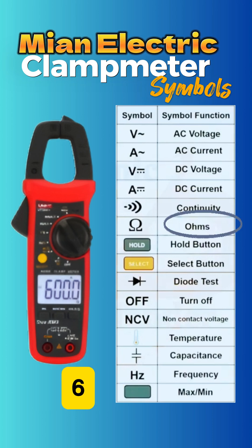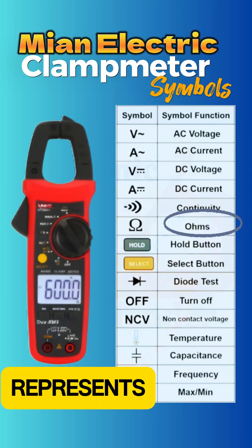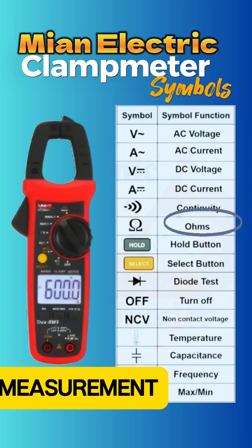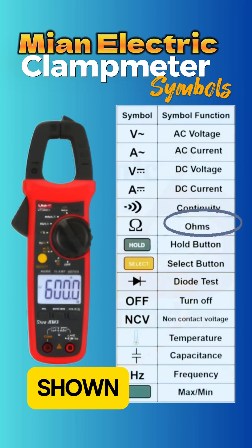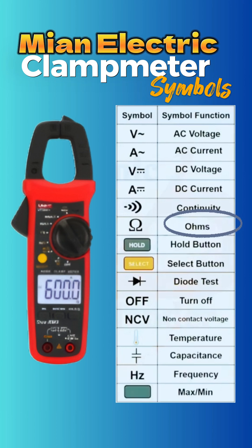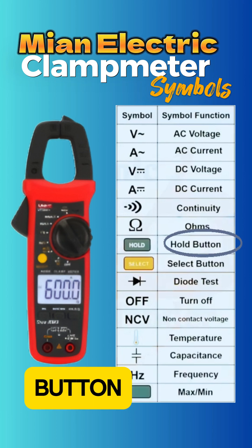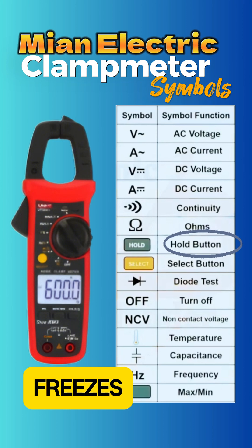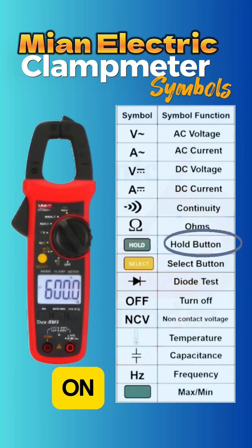Symbol 6: ohms. This represents resistance measurement shown in ohms. Symbol 7: hold button. This button freezes the current reading on the screen.